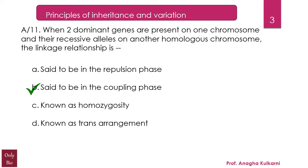Bateson was the first scientist to give the explanation of this lack of independent assortment by means of a particular hypothesis, which is known as the coupling and repulsion hypothesis. Coupling means when both the dominant alleles are on the same homologous chromosome and both the recessive alleles are on the other homologous chromosome.